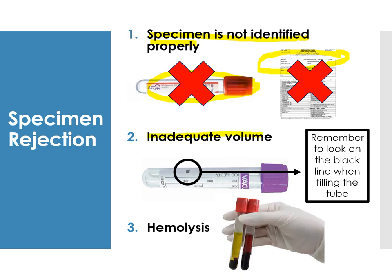Inadequate volume is another reason for rejection — always look at the black fill line on the tube, especially for EDTA and light blue tubes. The black line marks the maximum allowable blood volume; for EDTA, that is normally 2 to 3 ml. If the specimen is hemolyzed, the serum or plasma — normally light yellow — turns red, which will produce erroneous results and the specimen must be rejected.